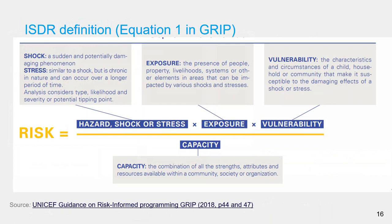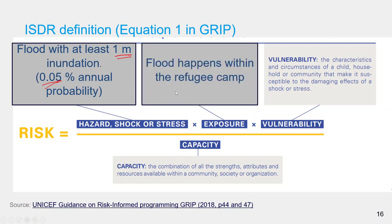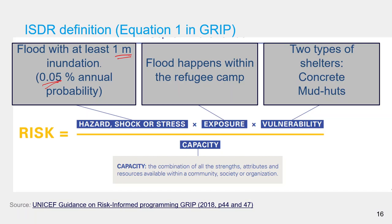Let us look at the risk definition using hazard, exposure, vulnerability, and capacity in more detail, using the same example of the flood in the refugee camp. The hazard shock or stress is a flood event with a specified magnitude — 1 meter flood depth — and a certain likelihood of 5% chance in a year. Both pieces of information are important when specifying a hazard. Then there is exposure: the fact that this flood happened in the refugee camp, as opposed to a grassland, causes it to create a certain level of damage. Then vulnerability: in our example, focusing on property damage, vulnerability is defined by the types of dwellings — concrete and mud huts. Mud huts are much more vulnerable compared to concrete dwellings.